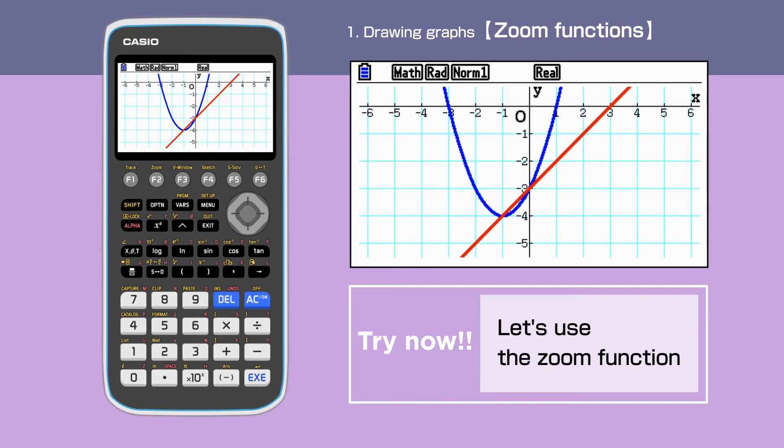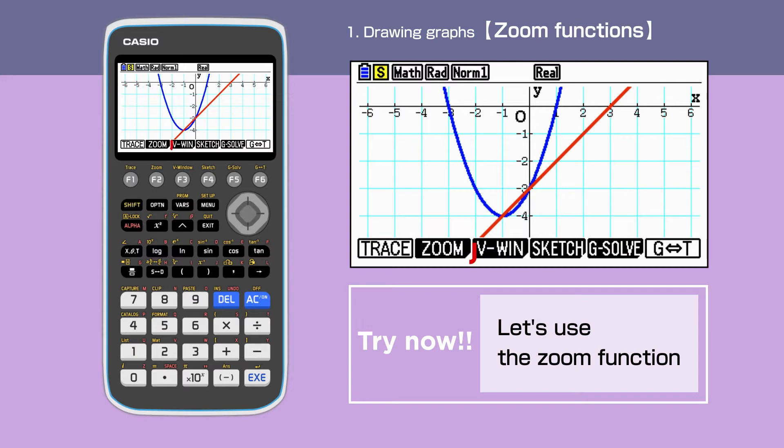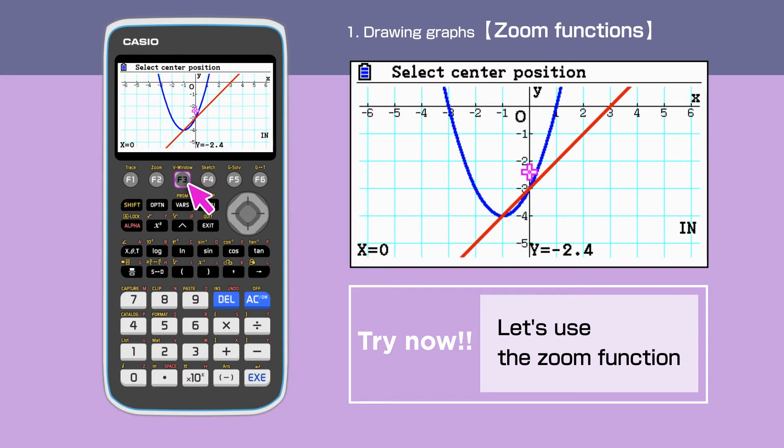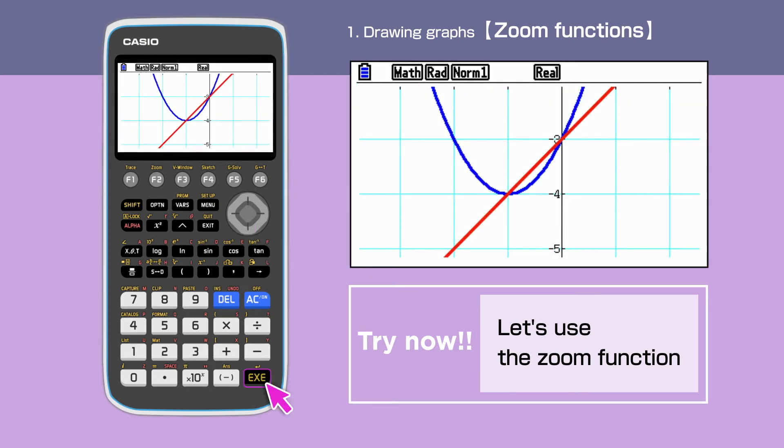For this, press Shift, then F2 to get the zoom command. Press F3 to choose zoom in command. Move the pink cursor close to one of the intersections and press Execute. The graph has been enlarged.